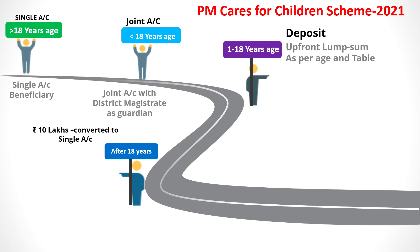Once the child attains 18 years — after the deposit was made when he was less than 18 years — the total amount accrued to the child will become 10 lakh rupees. The joint account held with the District Magistrate will then be converted into a single account in the child's name, and 10 lakh rupees will be deposited into this account.